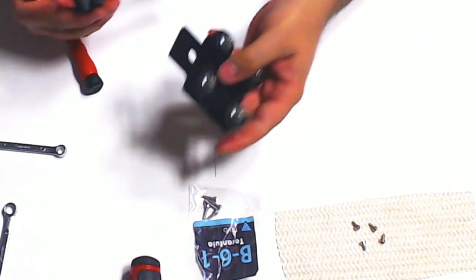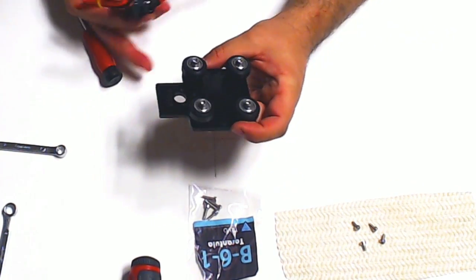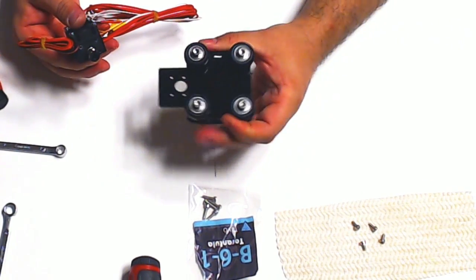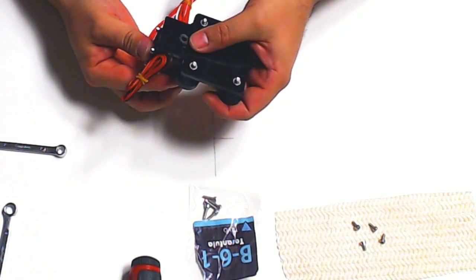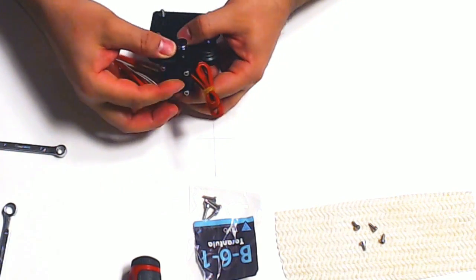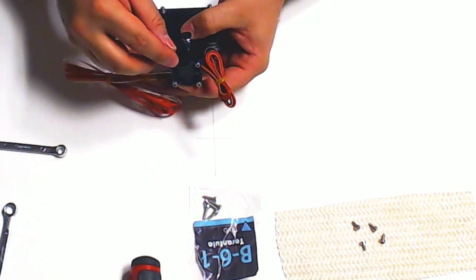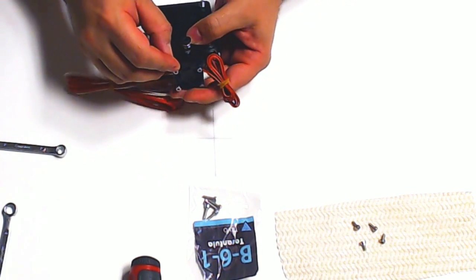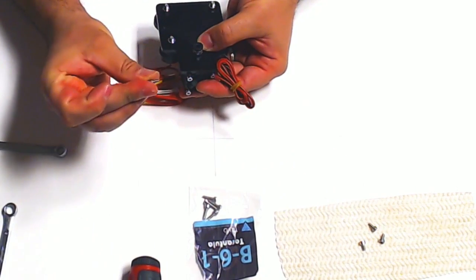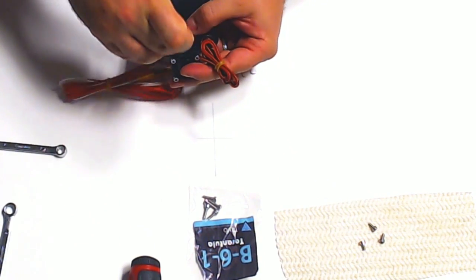And then lastly, we want to take our X carriage that we built in the first one, wheels facing down, fan facing out. We want to go ahead and mount this using these shorter M3 screws included in this package.